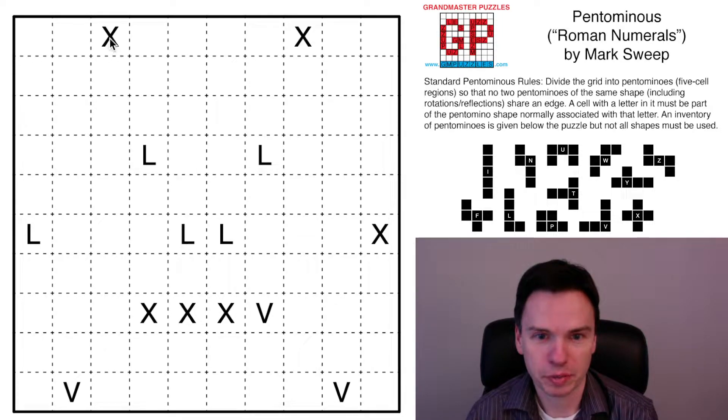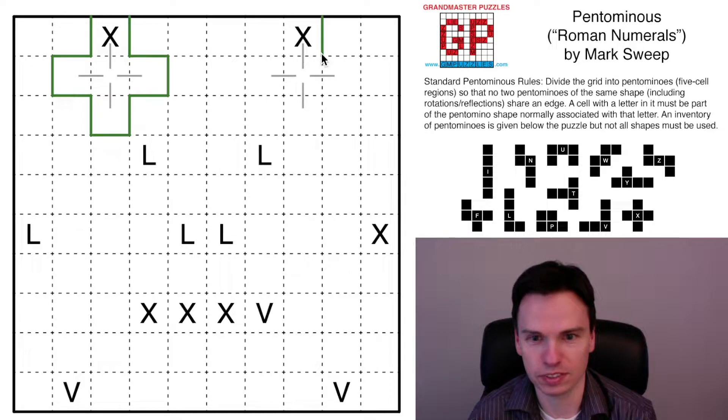So we're here to solve this Pentominous puzzle by Mark Sweep called Roman Numerals. It has three of the four Roman numeral clues, no I's in the grid, but this uses X's, L's, and V's. And these X's are really easy clues in this.